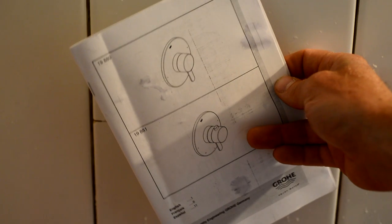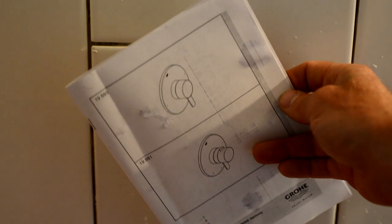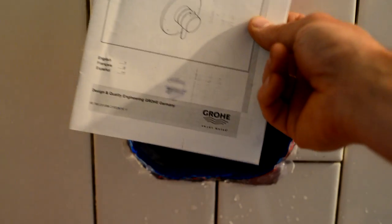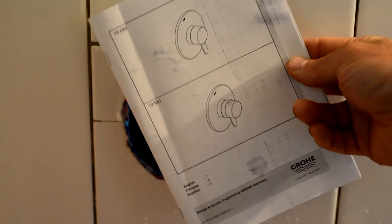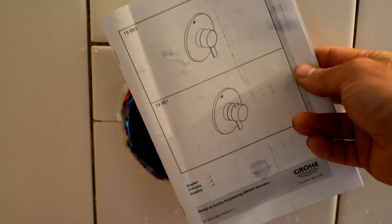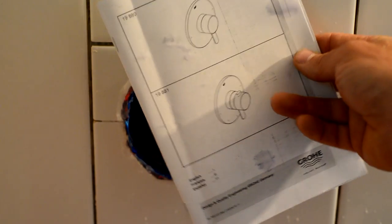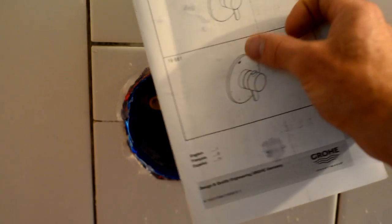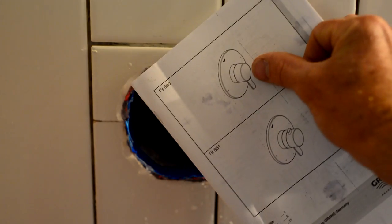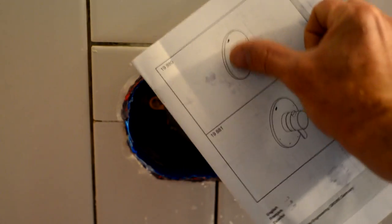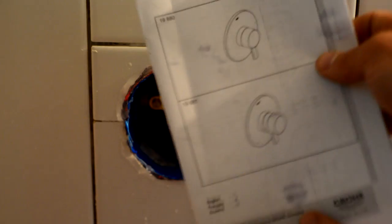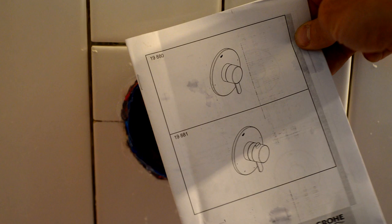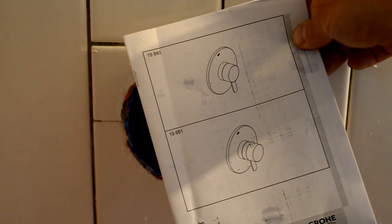The other part of the valve is the control valve. With this Grohe system there's really not that many, there's only about four different types that you can get and they have diverters in them if you have a tub. This is the one I got here with only one control on it. You just turn it on and it starts out cold and it goes all the way over to hot.